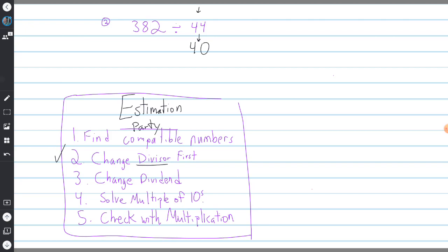We're going to change the divisor first. The divisor is the little guy—44—so we change it to 40. Next we change the dividend, which is 382. I ask myself: does 4 times anything give me 38? No. But 4 times 9 equals 36, which is really close to 38. So I'm going to change this to 360. Now I have 360 divided by 40.